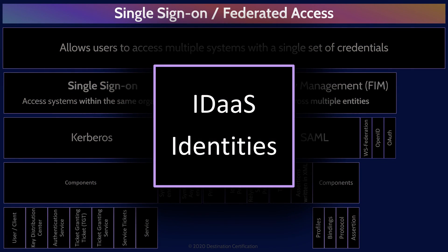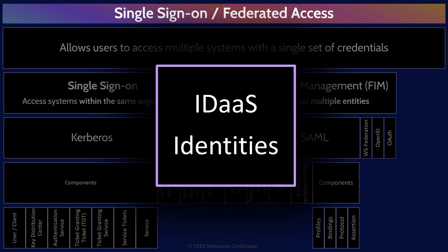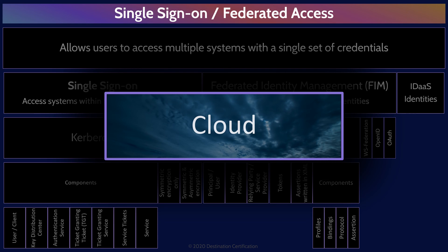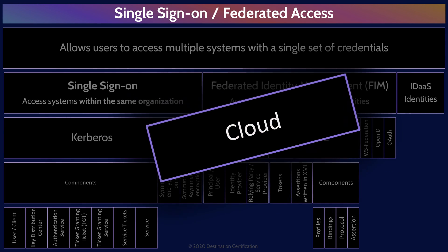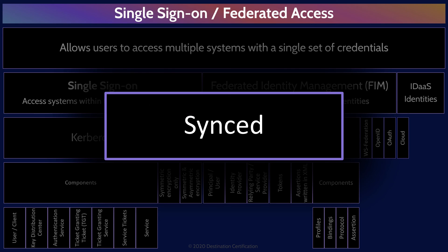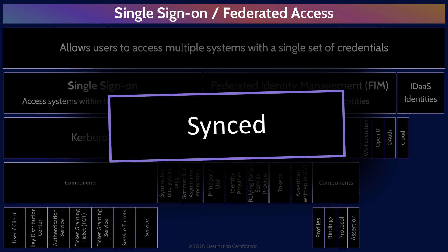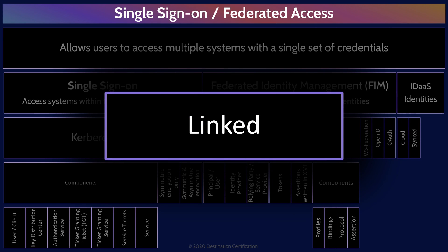The key types of identities we can use for IDaaS are as follows. A cloud identity is an identity created and managed in the cloud. Synced identities involve two identities — one created and managed locally, and a second identity in the cloud — where the key is that these two identities are synchronized, so a change to one is automatically reflected in the other. Linked identities are very similar: you have two identities, one in the cloud and one local, but changes to one are not automatically synchronized to the other.